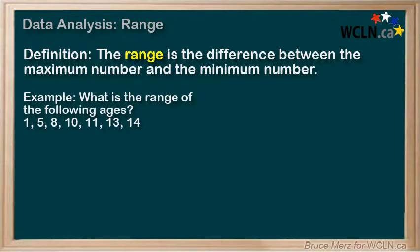For example, what is the range of the following ages: 1, 5, 8, 10, 11, 13, 14? Well, the maximum age there is 14 and the minimum age is 1, so the range is the difference between 14 and 1, which is 13.